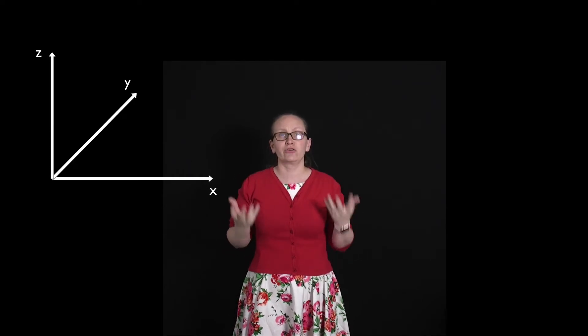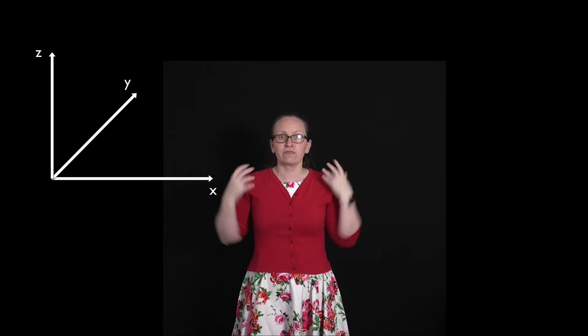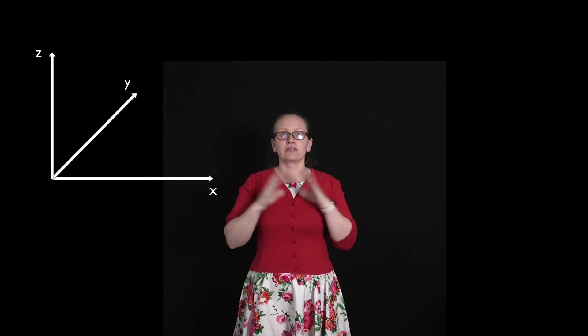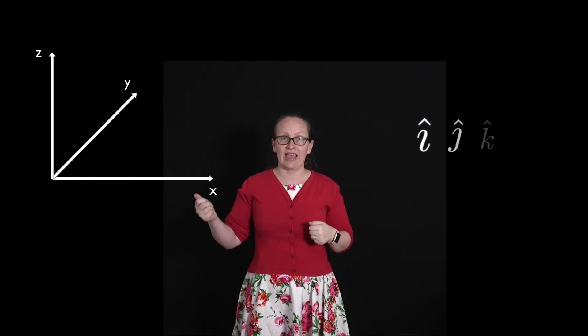We have special unit vectors which confusingly have different names from x, y, and z. The names for the unit vectors are i, j, and k.